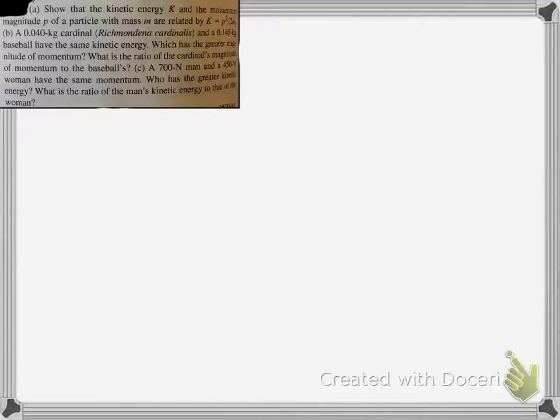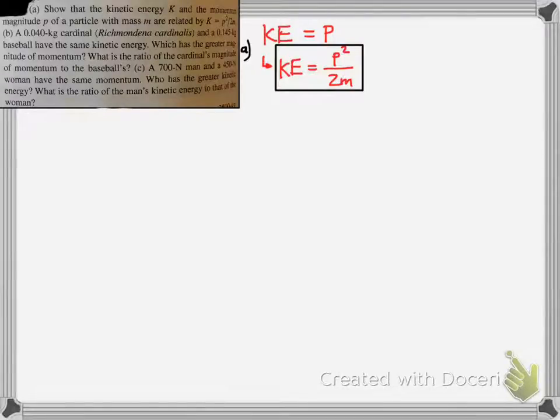We'll take a look at this problem here, shown in the upper left-hand corner. It says, show that kinetic energy K and the momentum magnitude of a particle with mass m are related by K = p²/2m. So what it's asking is, show that this formula is true.